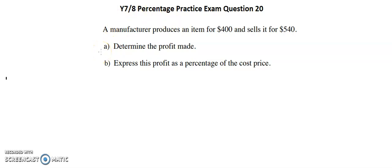Year 7 and 8 percentage practice exam question 20. A manufacturer produces an item for $400 and sells it for $540. Determine the profit made.